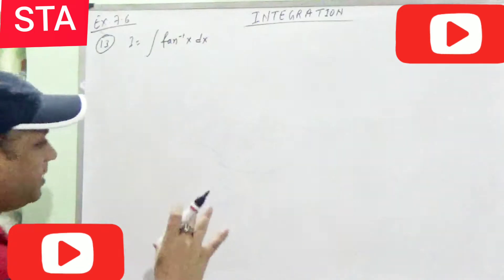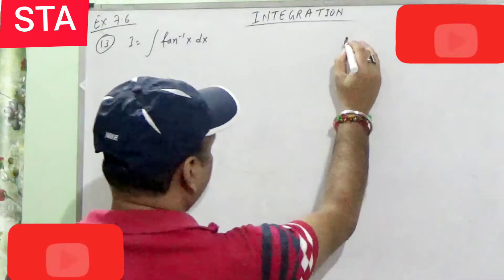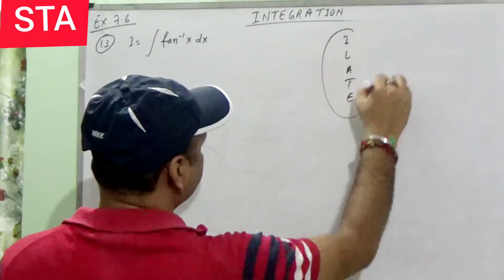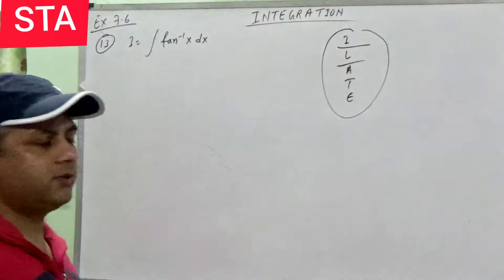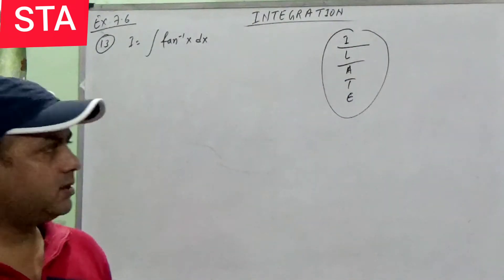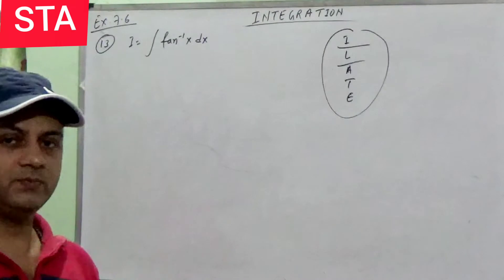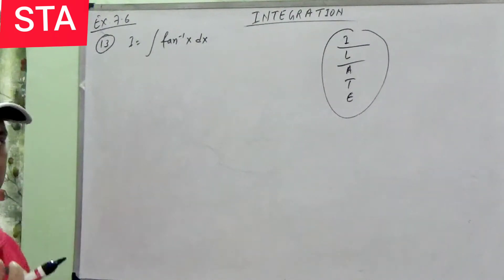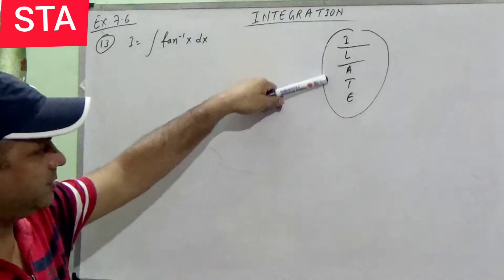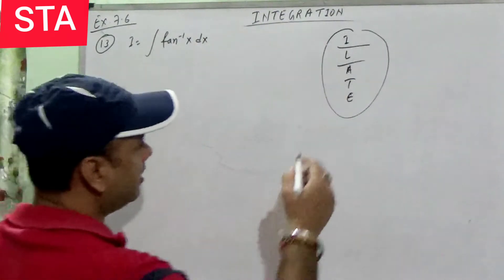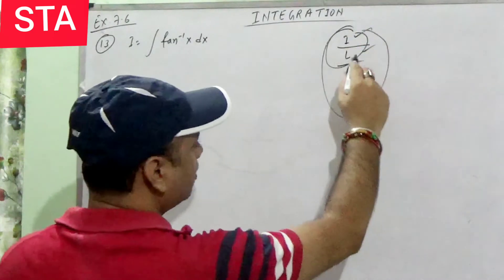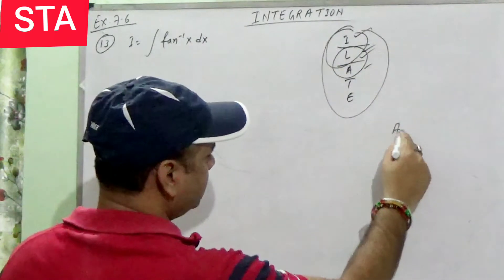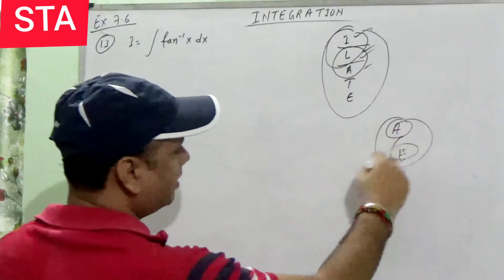For integration by parts, we use the word ILATE: I for Inverse, L for Logarithmic function, A for Algebraic, T for Trigonometrical, E for Exponent function. This order helps you navigate which part to take as the first function and which as the second. Whichever comes first in ILATE is taken as the first part, and the other is taken as the second part.